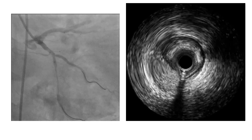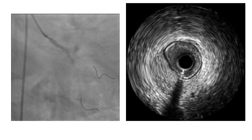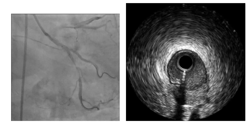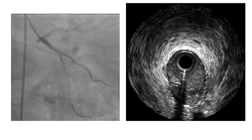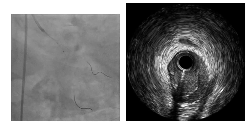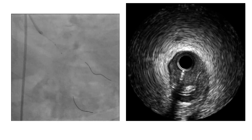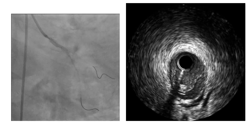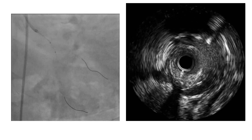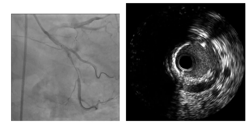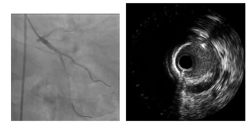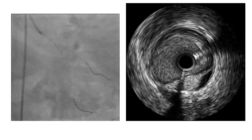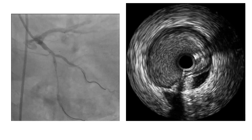Now we are at the level of the proximal circumflex, coming to the level of the proximal bifurcation. This is still within the hematoma itself. We can see a single wire, and now another wire comes into view — this is the bifurcation. Proximal to that, we can see the hematoma extends proximal to the bifurcation.